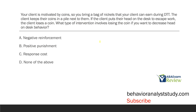Your client is motivated by coins, so you bring a bag of nickels that your client can earn during DTT. The client keeps their coins in a pile next to them. If the client puts their head on the desk to escape work, the client loses a coin. What type of intervention involves losing the coin if you want to decrease head on desk behavior? We obviously have a consequence intervention going on here. The intent here is to decrease behavior. The consequences that decrease are extinction and punishment, so we're looking for either punishment or extinction.